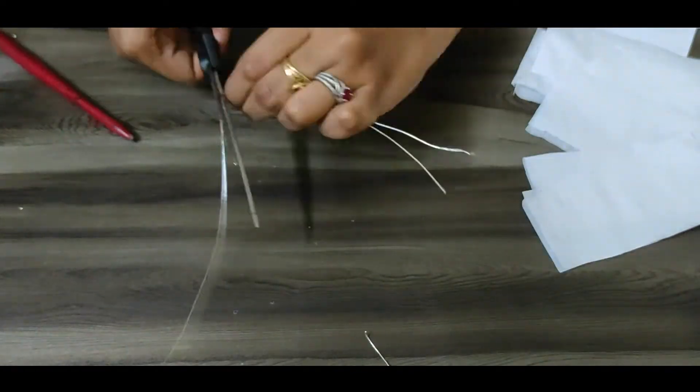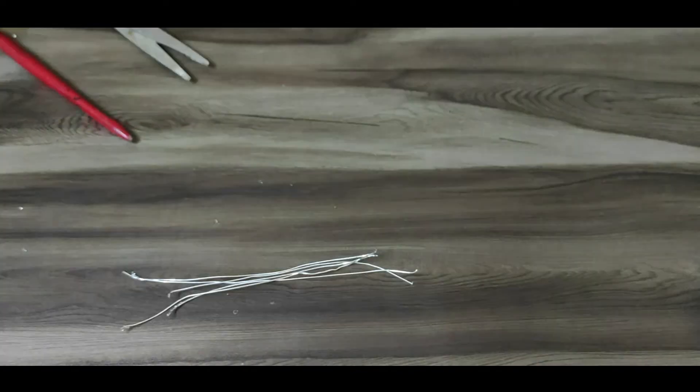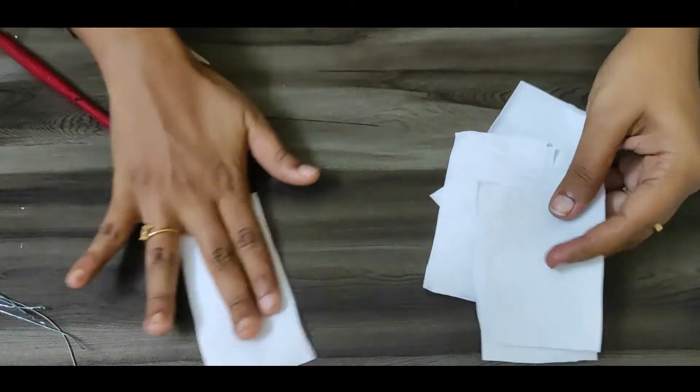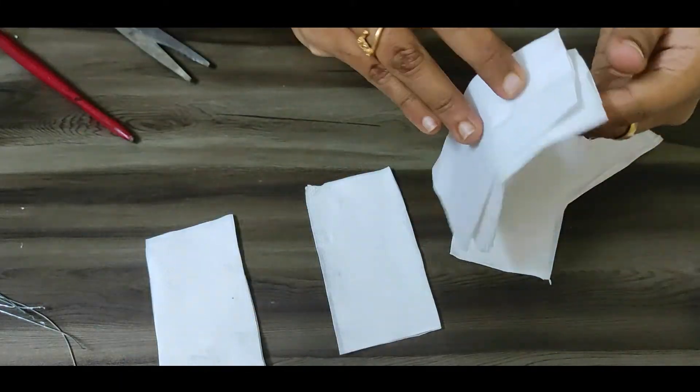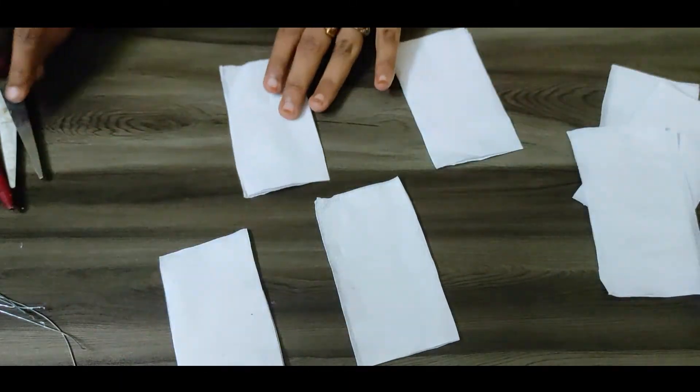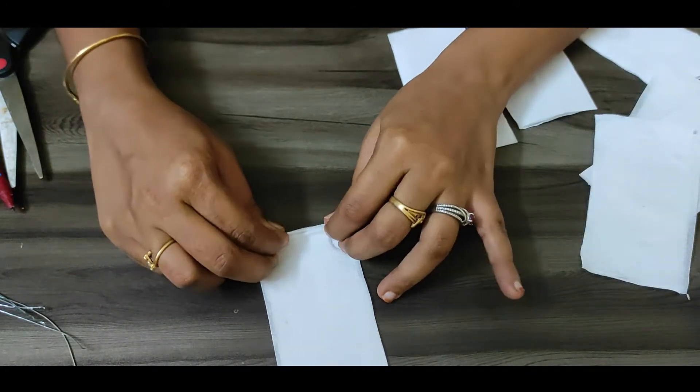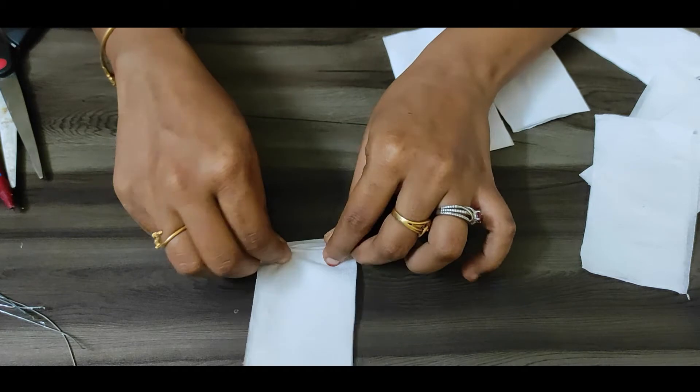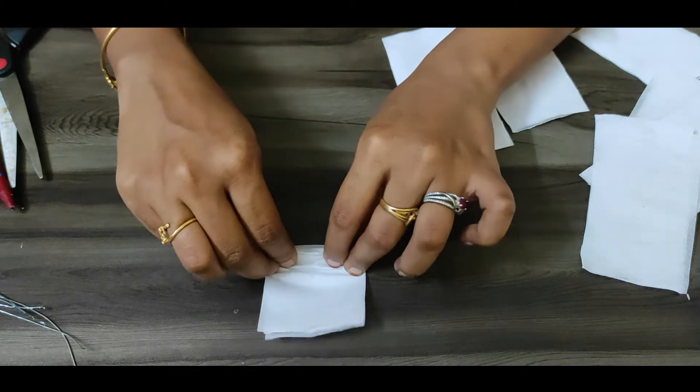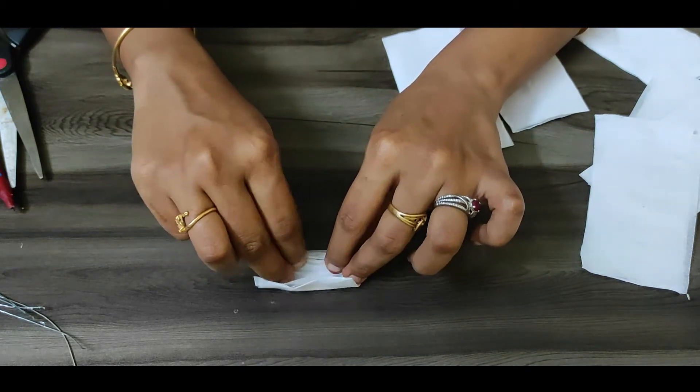Let's cut the strings. We will cut 4 strings. Now the tissue is over. Now take a tissue paper. We will fold the fingers. We will fold the small folds. Fold it.